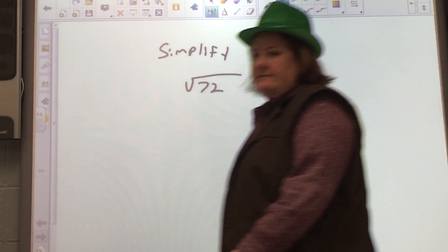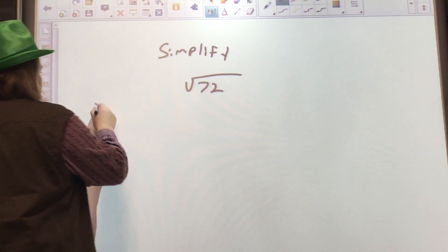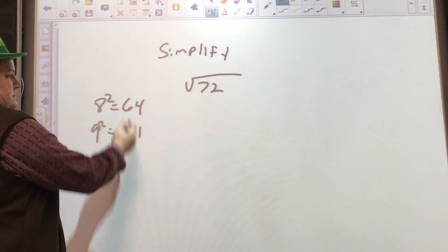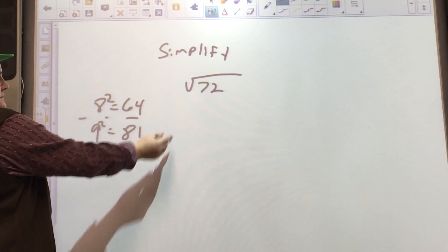First I'm going to check to see if 72 is a perfect square. I know 8 squared is 64 and 9 squared is 81, so that skipped over 72. 72 is not in there,